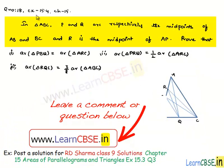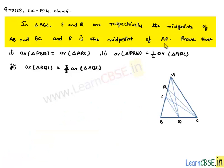Let us discuss question number 18 from exercise 15.4, chapter 15. In triangle ABC, P and Q are respectively the midpoints of AB and BC, and R is the midpoint of AP. Prove that: area of triangle PBQ equals area of triangle ARC; area of triangle PRQ equals half times area of triangle ARC; and area of triangle RQC equals 3/8 times area of triangle ABC.